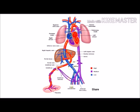The foramen ovale is the shunt connection between the left atrium and right atrium. The ductus arteriosus is an artery-to-artery connection between the pulmonary artery and the aorta. It shunts blood from the pulmonary artery to the aorta, bypassing the lungs. In adult circulation this blood goes through the pulmonary vein to the left atrium, then left ventricle, then to the aorta — but here it enters the aorta directly.